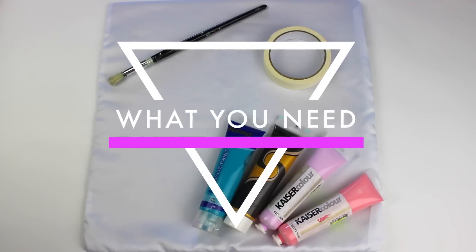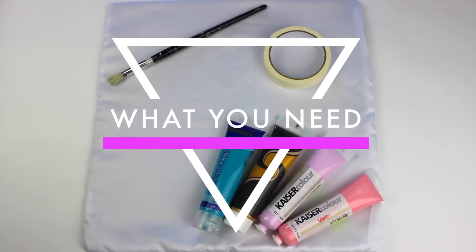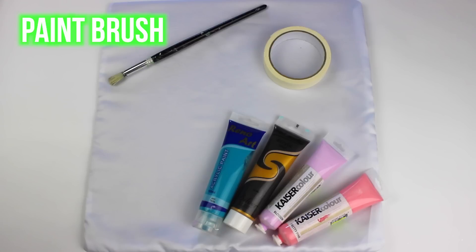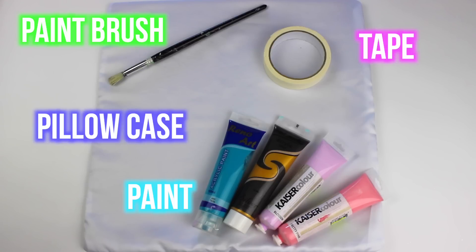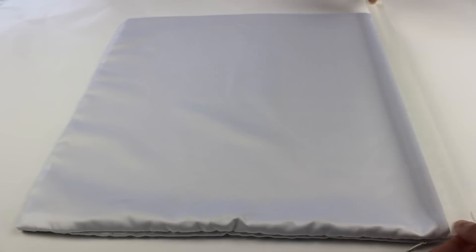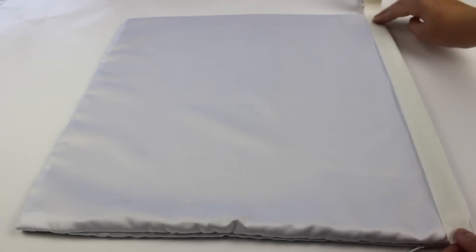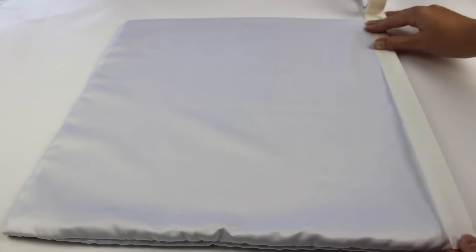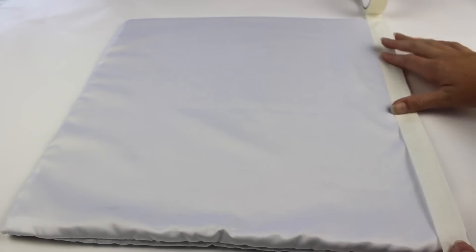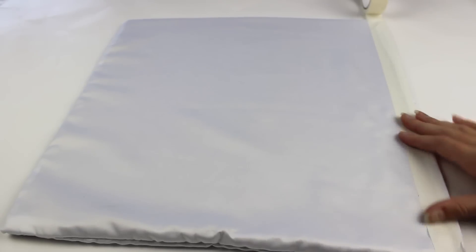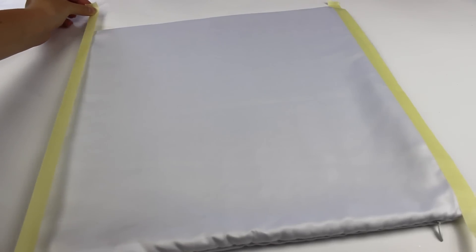What you need for this geometric pillow is a paint brush, some paint, tape and a pillow case. So first using your tape, tape the border of the pillow case so you don't get any tape on the outside. So pretty much just tape a border making sure there is no bubbles in it so the paint won't be able to bleed and just stick that all the way around the border of the pillow.